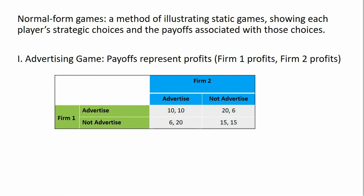Again, the decisions of the firms are going to be made simultaneously. Firm one cannot see what firm two is going to do in terms of its strategy until both strategies are revealed at the same time. There are basically four possibilities. Both firms could advertise, and we end up with a payoff of 10, 10 — where the first number refers to firm one's profits and the second number, after the comma, refers to firm two's profits.